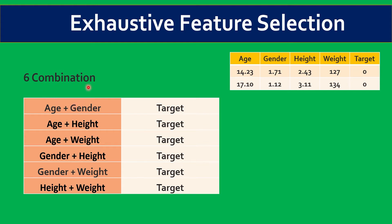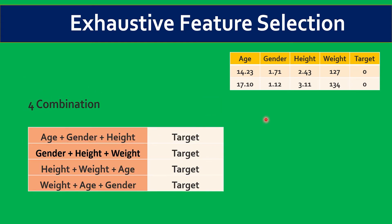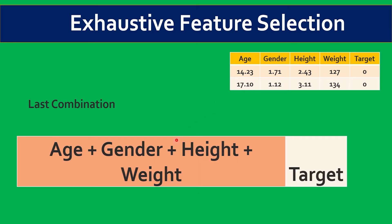In the next iteration, it takes combinations of three independent variables: age+gender+height, gender+height+weight, height+weight+age, and weight+age+gender — four more combinations, bringing the total to fourteen. And in the last iteration, it takes all four independent variables — age, gender, height, and weight — and tries to predict the value of the target variable.